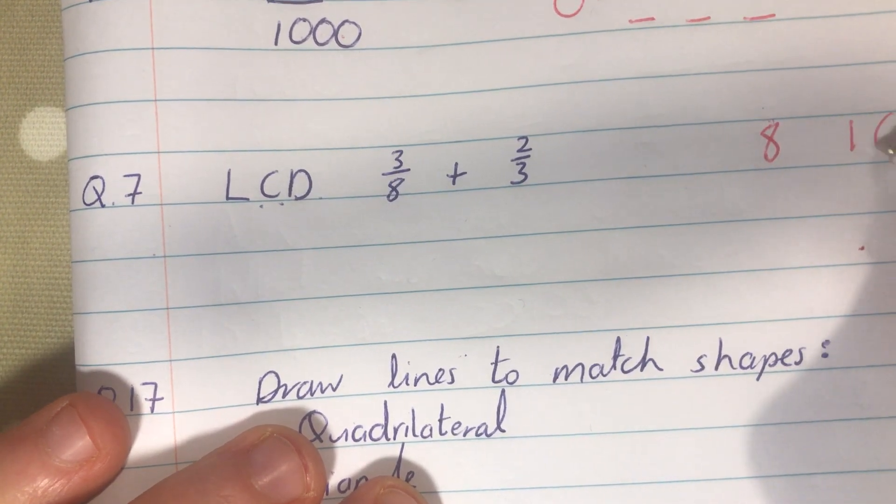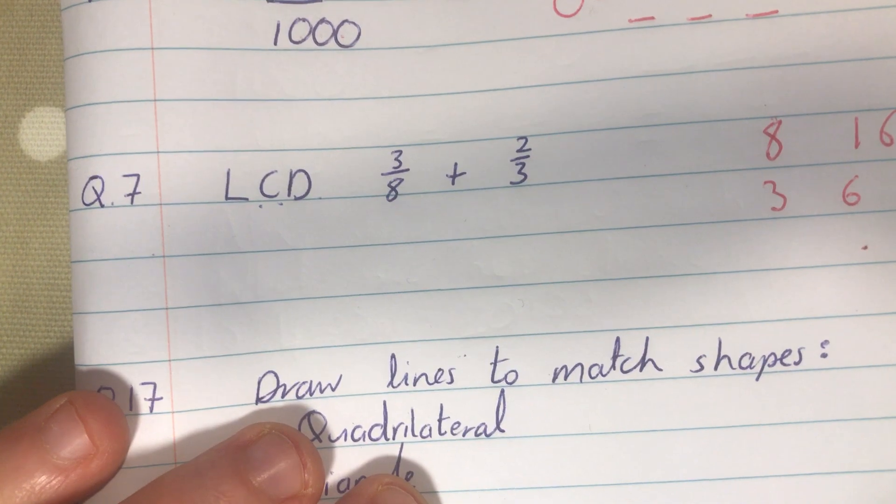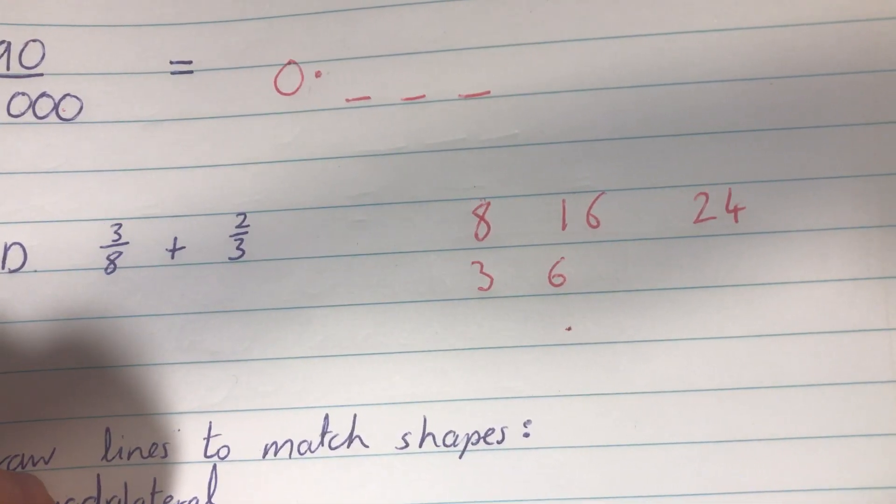We're getting good at these now too. Again, count up on your eights, eight, sixteen, twenty-four, count up on your threes, three, six, blah, blah, blah, blah, you'll be able to figure that out. Off you go, you'll be able to figure that one out.